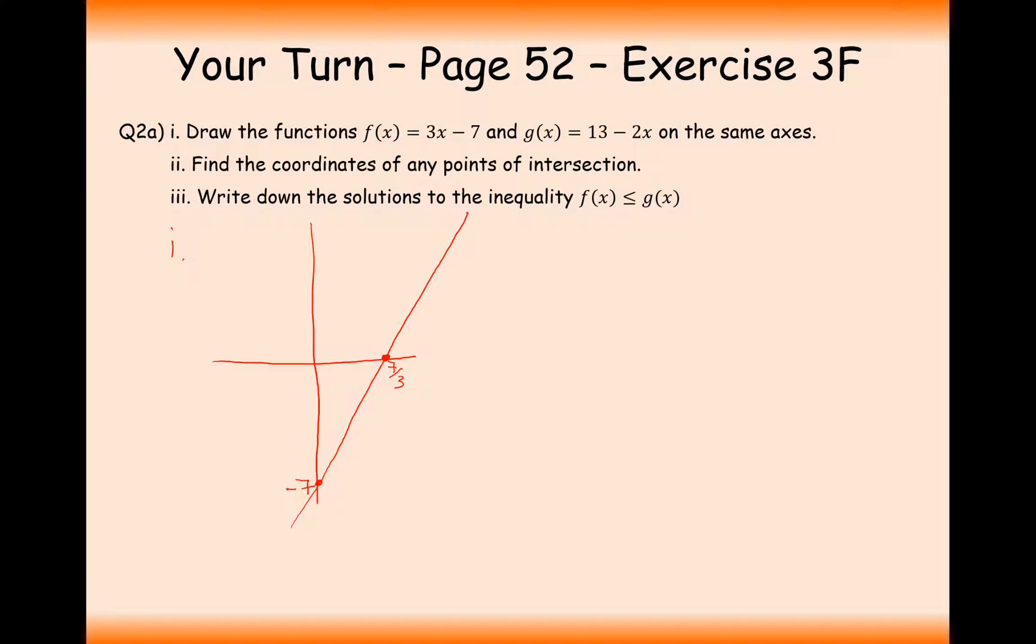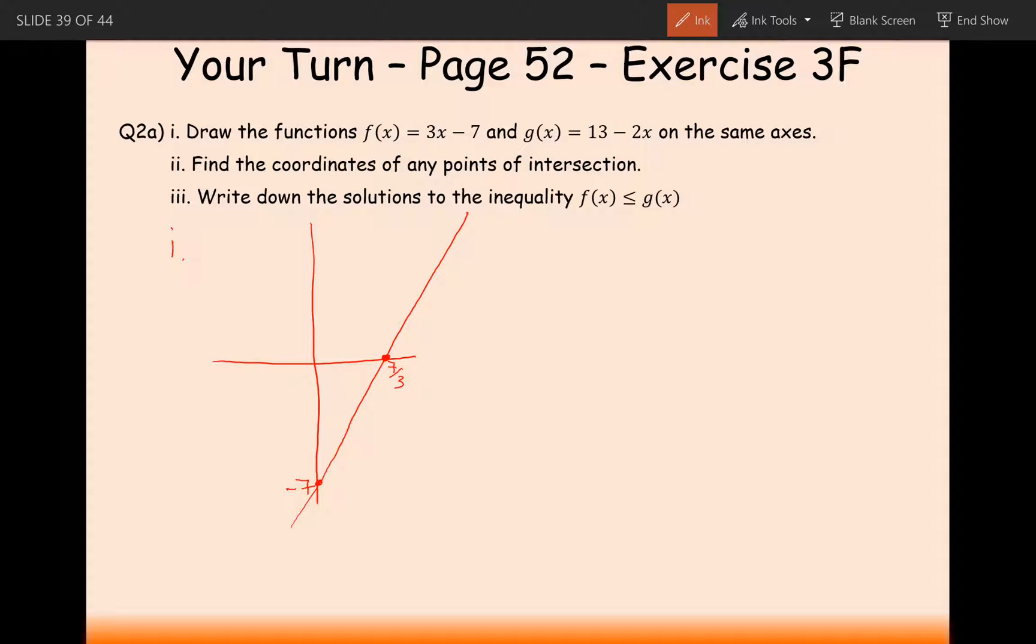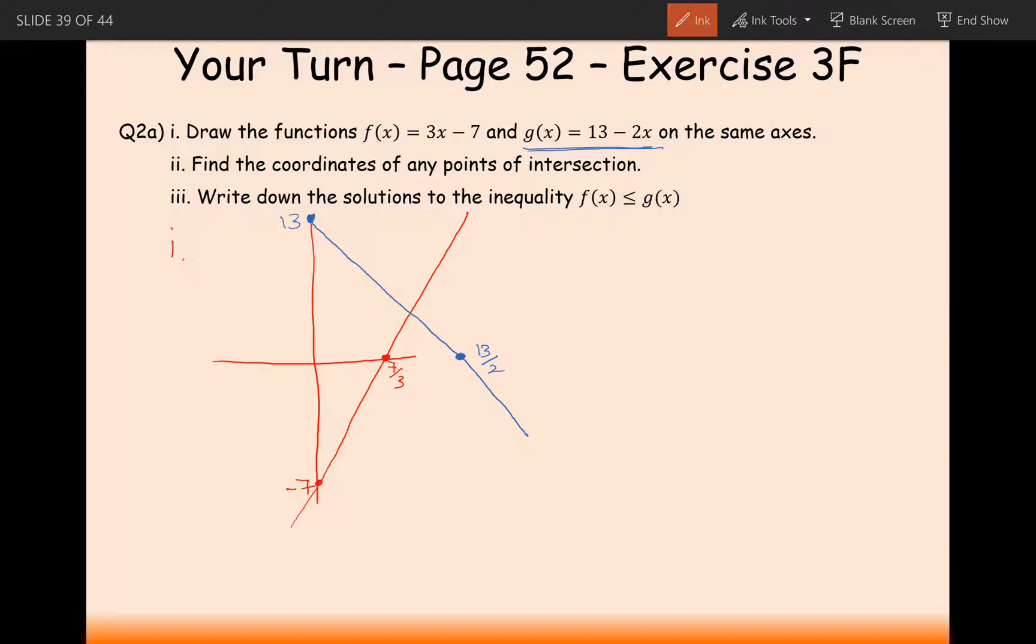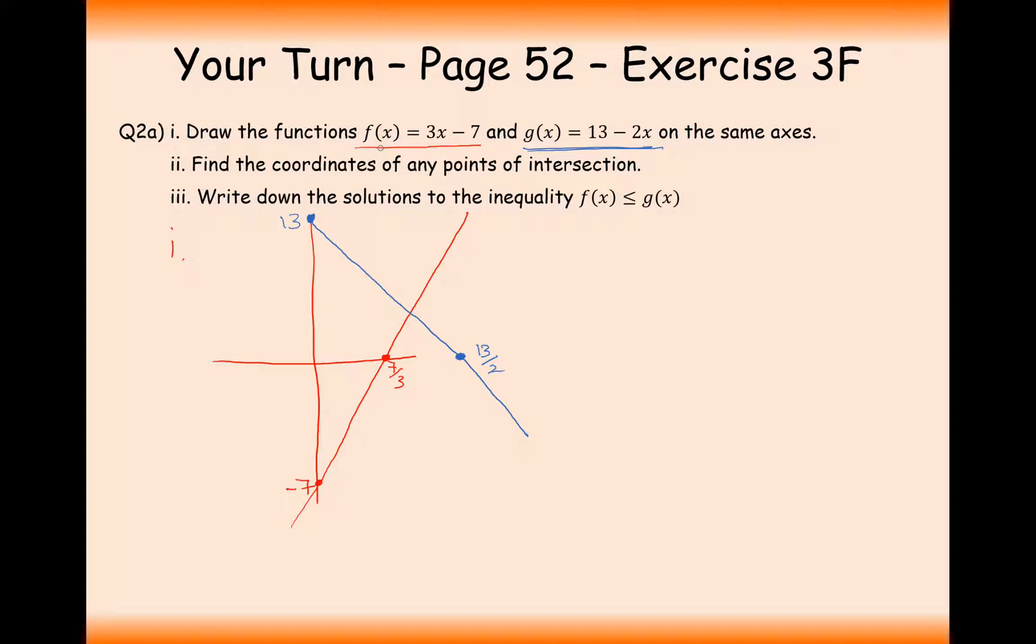For the g(x) graph, let's change color for that. We're going to start up at 13, and this time the gradient is going to be negative 2x. So we're going to go downward sloping like this. It's going to intersect the x-axis at 13 over 2. The red graph was the f(x) function.